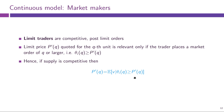Limit traders are once again competitive and they post limit orders using the marginal price schedule P'(Q). When does a limit trader who submitted some price for the Qth unit actually get to trade? This order is only executed if the market trader places a market order of size Q or larger.